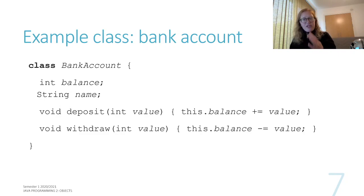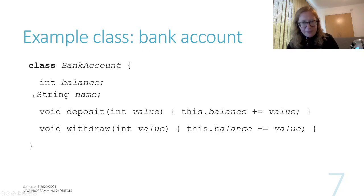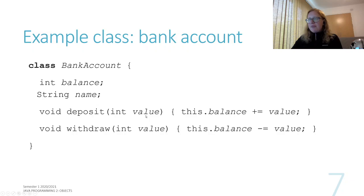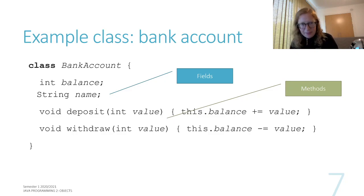Let's say we want to represent a simple bank account. The way we define that in Java is we say we're defining a class, we give it the name BankAccount, and maybe if you define a bank account in a very simple way, it's got a balance — how much money is there in it — and what's the name of the person who's the account holder. Those are the properties of a bank account. And then the behaviors — the things you want to do with the bank account — are maybe you want to deposit money into it, in which case here's a deposit method, or you might want to withdraw money from it. These methods are now not defined at the top level; they're defined inside this class. You define the body of a method the same way, but it just lives inside a class. Those are the fields of this class, and those are the methods of this class.